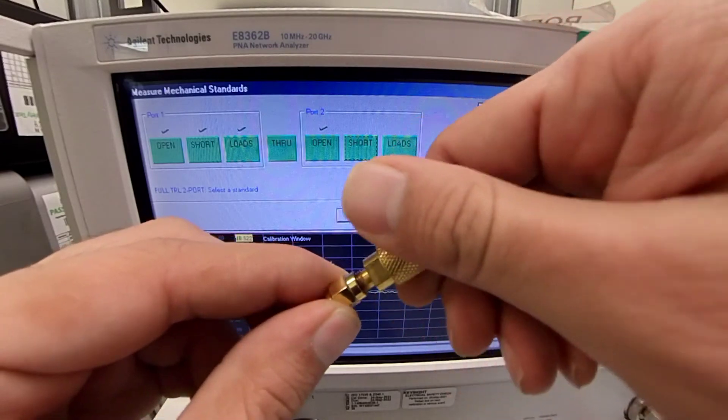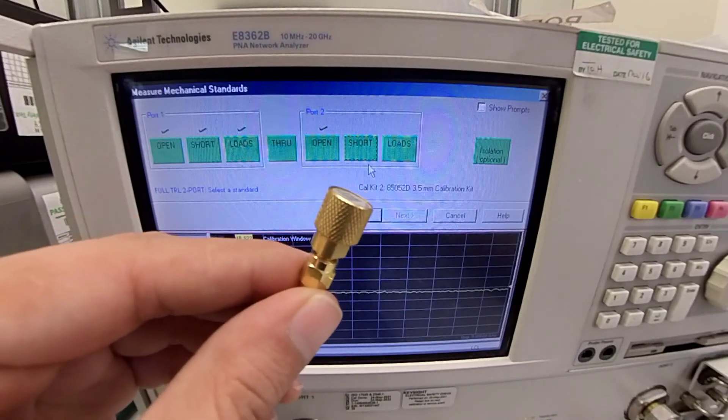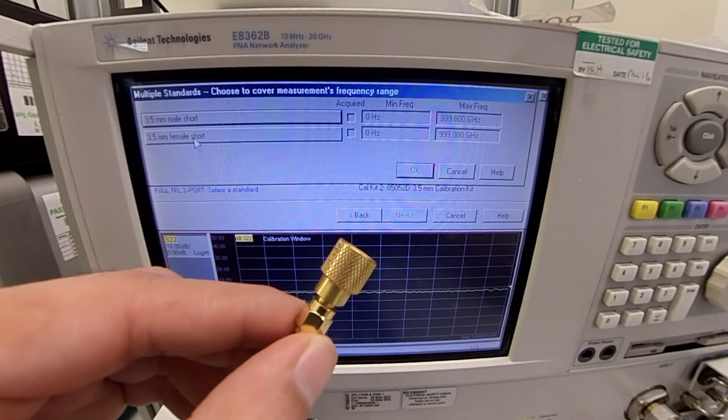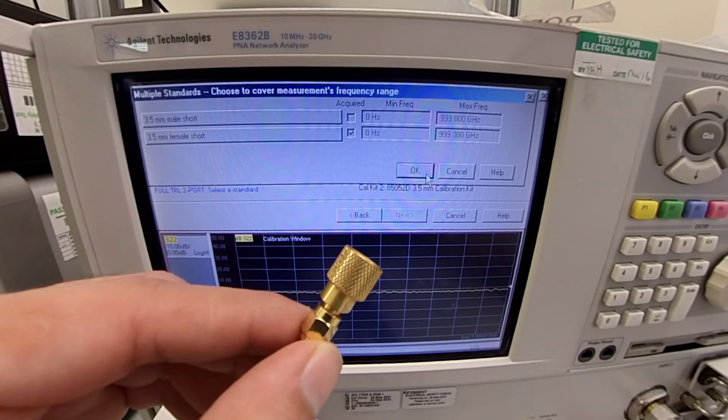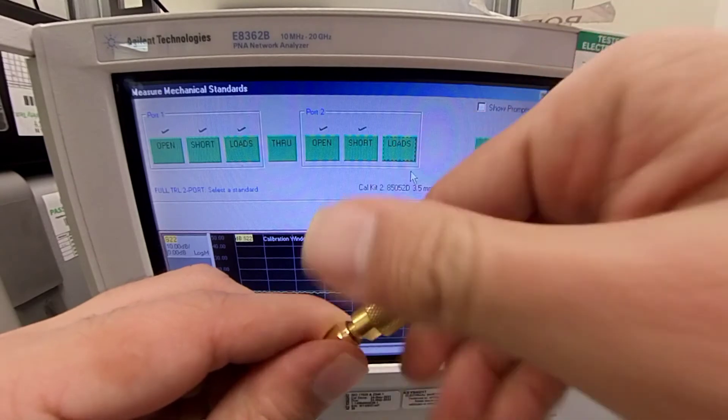Now, we select the short. Now, we replace this with the broadband load.